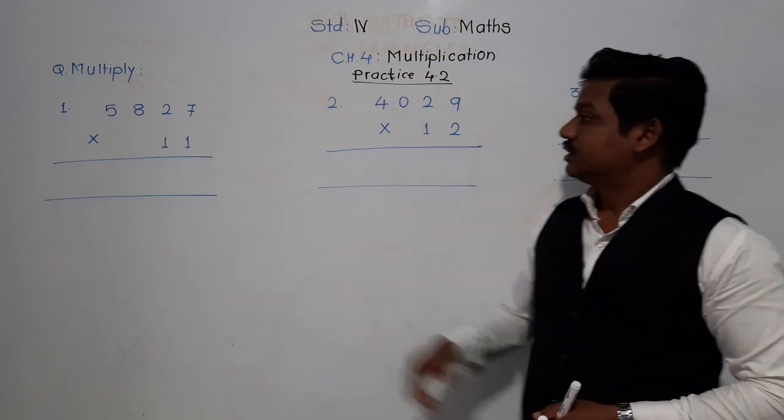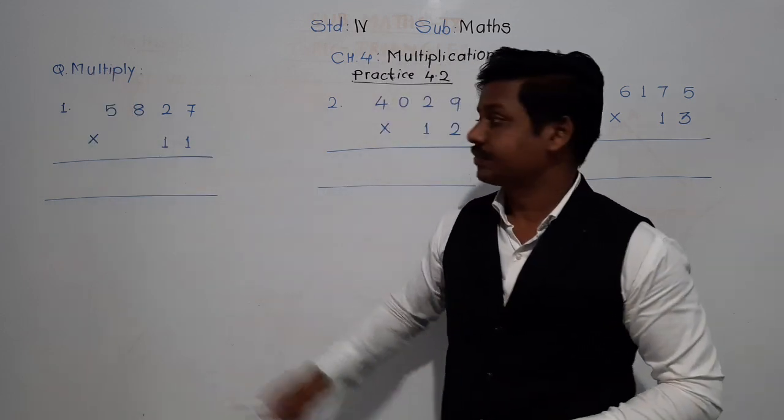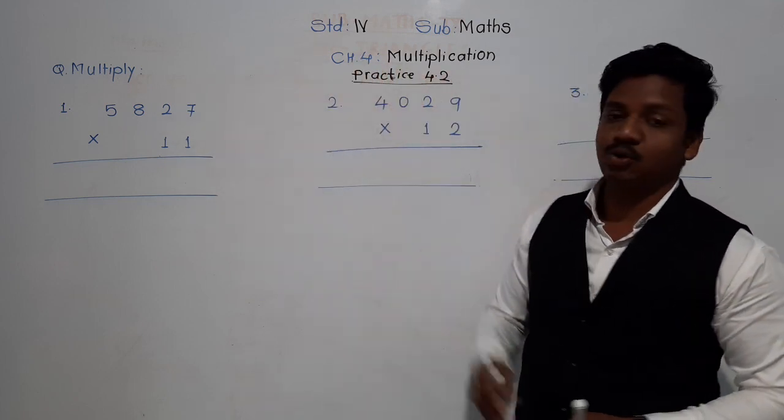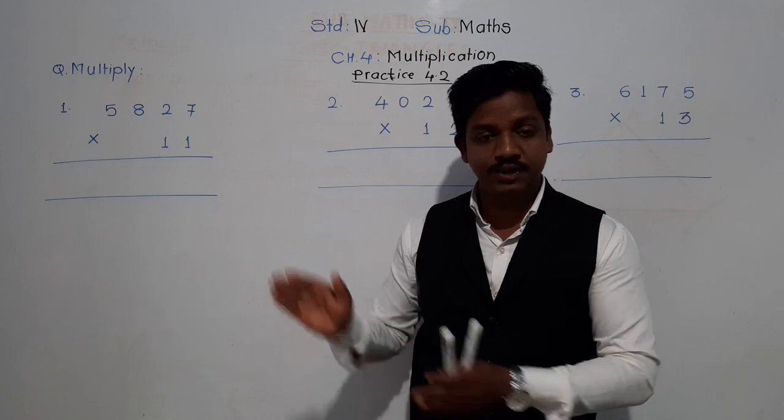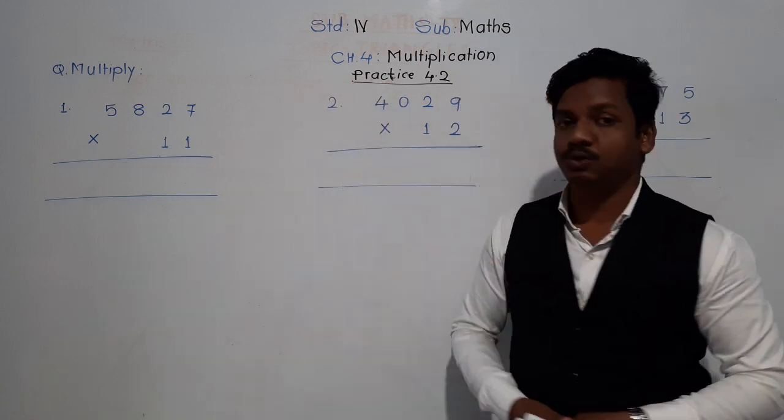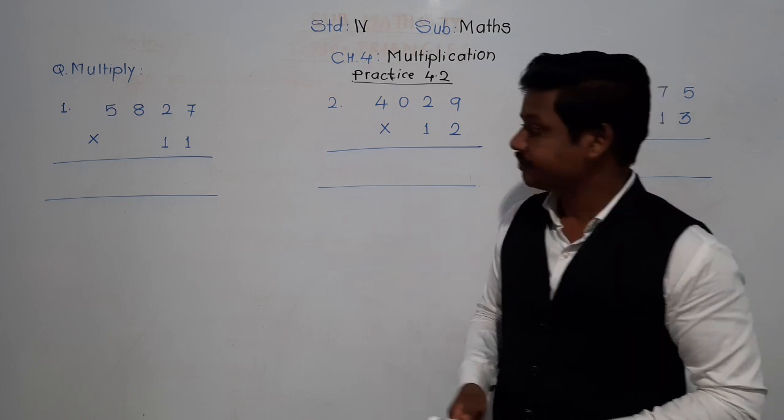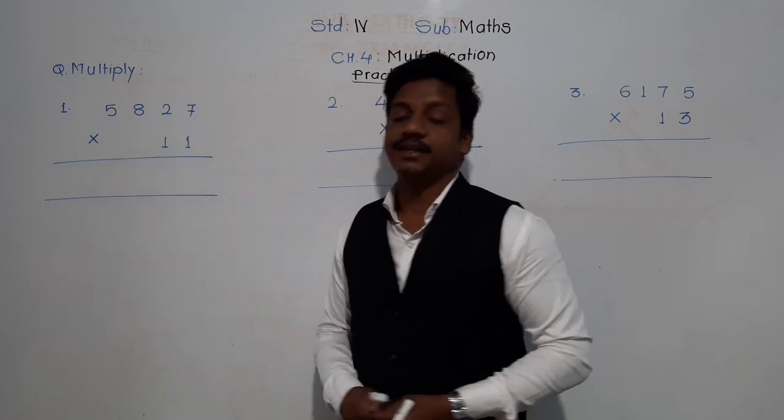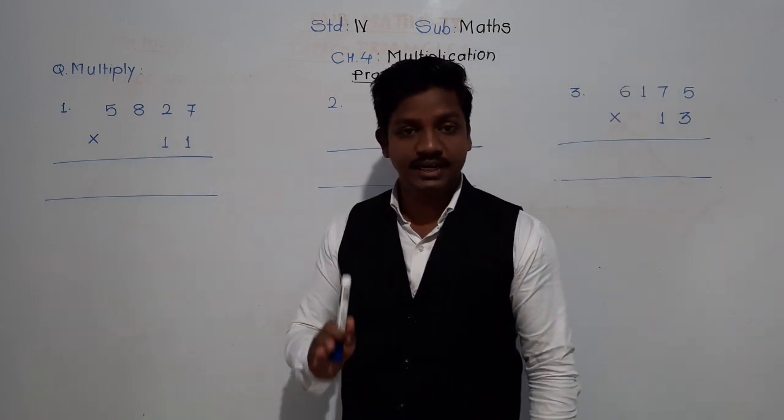Now see here the first example, the question is multiply. See, this practice 4.2 you have to solve in the textbook, so open your textbook and open this practice 4.2. There is space, you can write the answer there. So see here, 5827 into 11.